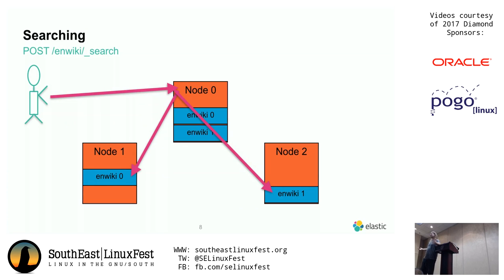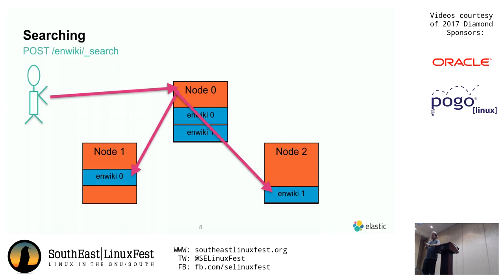Elasticsearch can be run with nodes configured in a bunch of ways. You can turn on and off whether a node has data on disk. In this picture there are three nodes — three physical machines — and they all have data written on disk. Elasticsearch has tried to balance that data on disk as best it can. There are four things to balance three ways, so one node just gets extra.